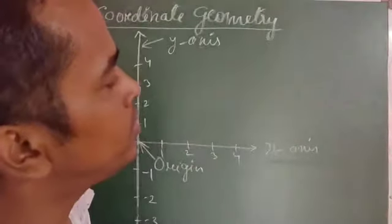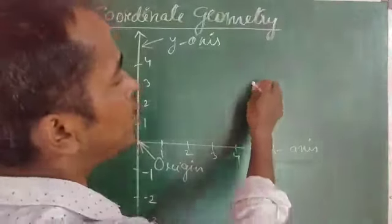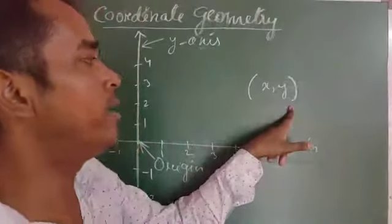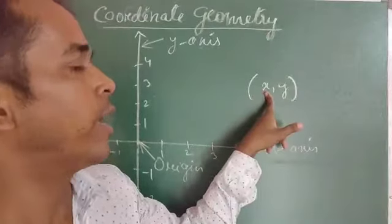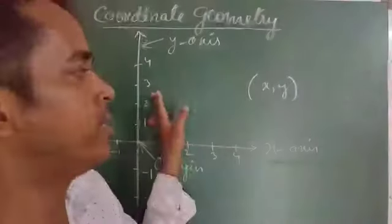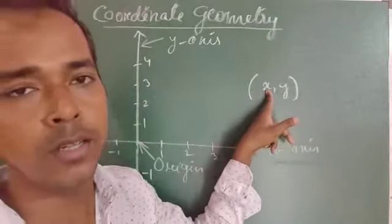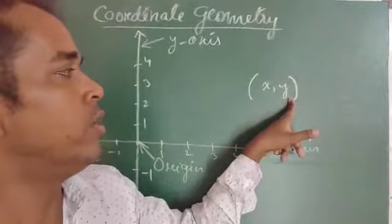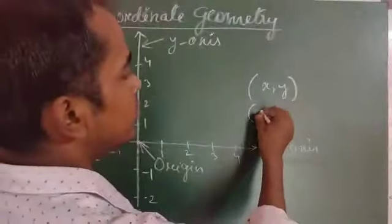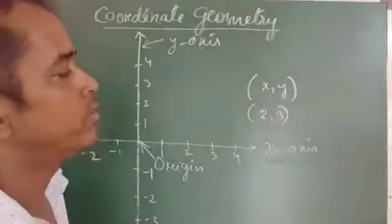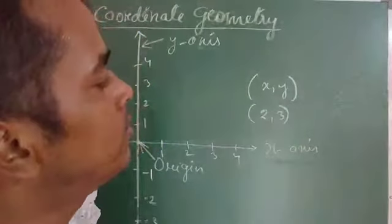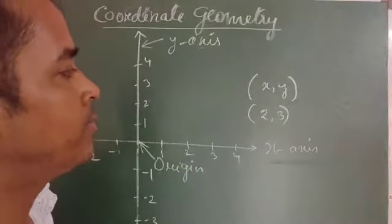We write this pair of values as (x, y) — small x for the x-axis and y for the y-axis. This is called the x-coordinate and this value is called the y-coordinate. For example, let us take the point (2, 3) and plot it in the Cartesian plane.